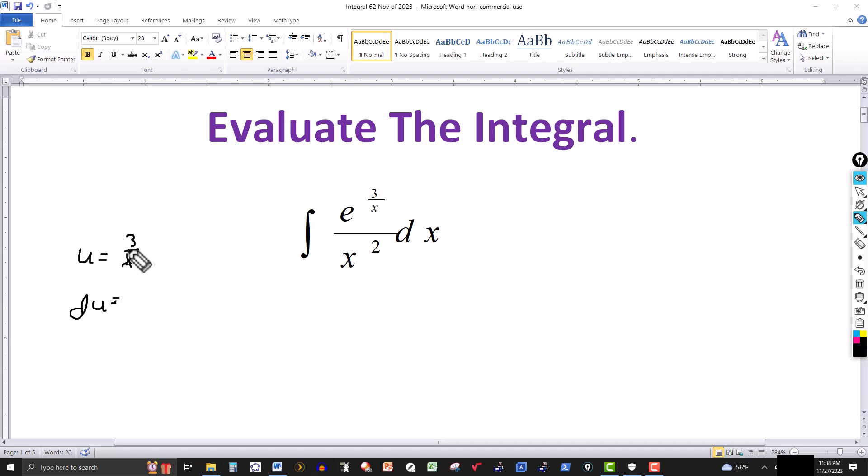Because when I take the derivative of this and think of this as 3 times x to the negative 1, same thing, take the derivative, it's negative 1 times 3, negative 3, subtract 1 from the exponent, negative 1 minus 1 is a negative 2, and then it's a dx.